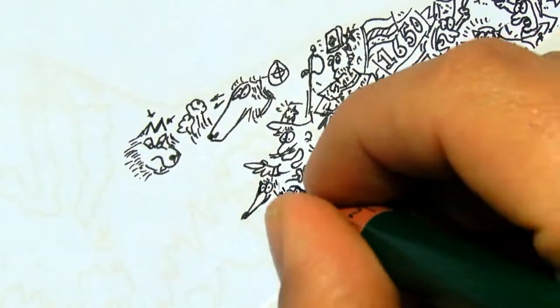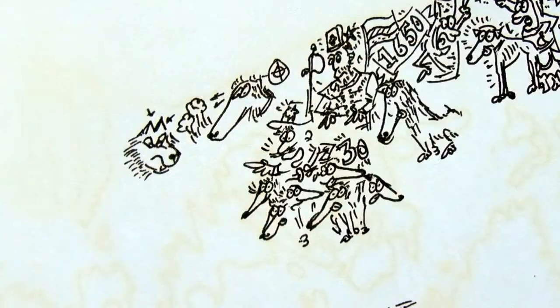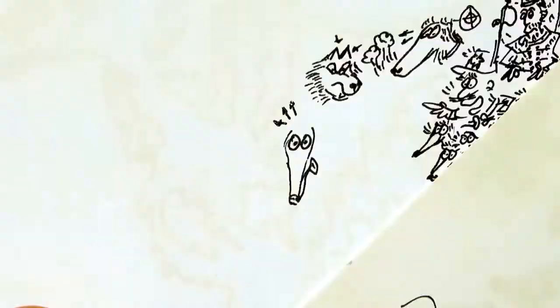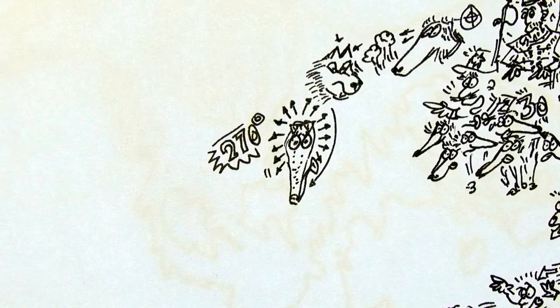As a sighthound, these dogs have an incredible wide-field vision of 270 degrees.